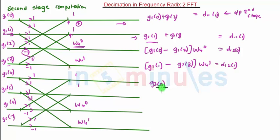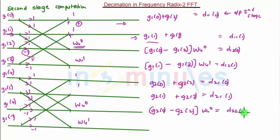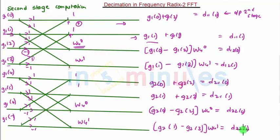For the second part, d21 of 0 equals g2 of 0 plus g2 of 2, and d21 of 1 equals g2 of 1 plus g2 of 3. Looking at the butterfly, we can directly form the equations without memorizing them. So d22 of 0 equals g2 of 0 minus g2 of 2 multiplied by W4 raised to 0, and d22 of 1 equals g2 of 1 minus g2 of 3 multiplied by W4 raised to 1. The minus-1 factors and twiddle factors W4^0 and W4^1 directly determine the equation form and are important.